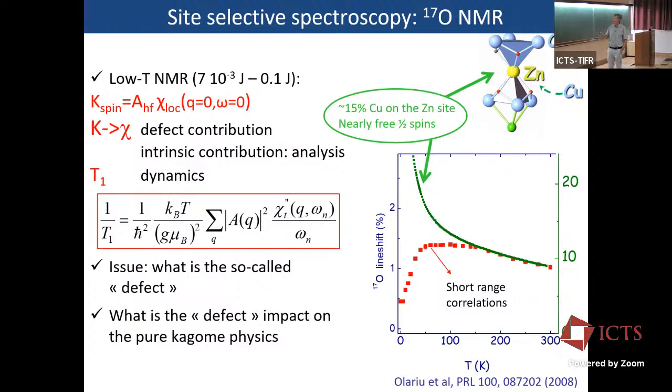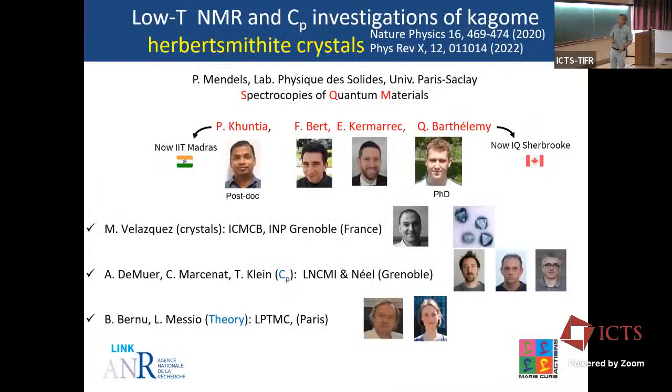And also try to discriminate this defect contribution from the intrinsic contribution from the cargo membrane. And with T1, you heard a lot about T1, you can investigate the dynamics. And again, you can investigate it since it's a spectroscopic technique, you can reveal the defect part, what is associated to the defect part, and to the other part, the main part, which we call intrinsic. So early on, this is a macroscopic susceptibility measurement. So you have a huge Curie tail here. And this is a strictly Curie without any vice temperature above 1K, which is very, very small as compared to J, which is of the order of 200K.